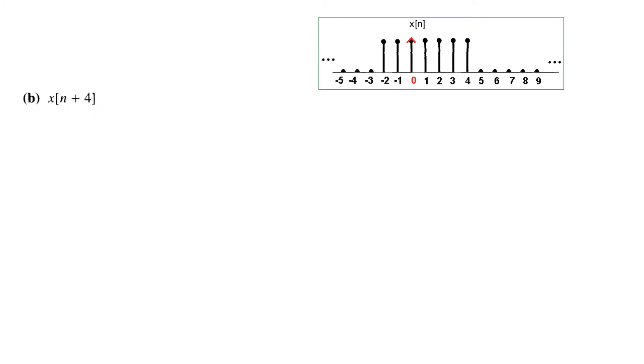So x[n plus 4]. So n plus 4 again we will put this equal to 0. n plus 4 is equal to 0. That is n is equal to minus 4. So we will move this in a manner that hat comes at minus 4. So we moved it. Hat is at minus 4. And now you can see from here that the signal is 0 for n less than minus 6. And also it is 0 for n greater than 0. So n less than minus 6 or n greater than 0 is our answer.